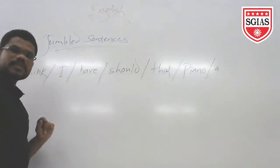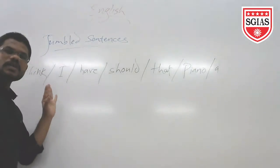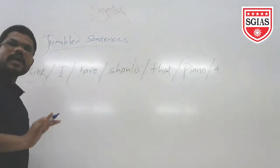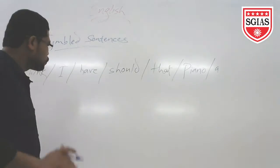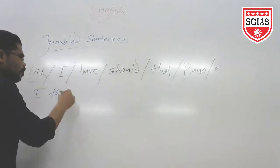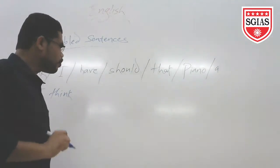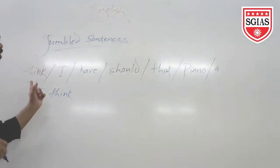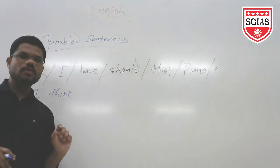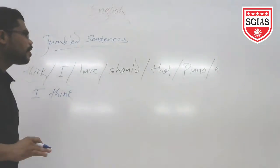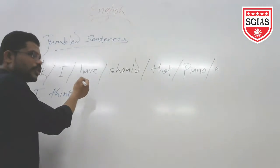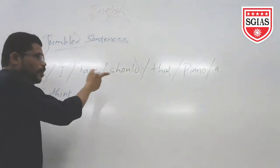If we observe these parts, we are able to identify that 'I think' is the main clause — 'I' is the subject here and 'think' is the verb of the main clause. Whereas, there is another part which is the subordinating clause. A conjunction is used to join the subordinating clause.